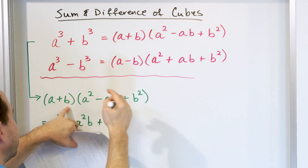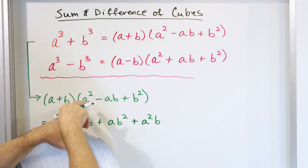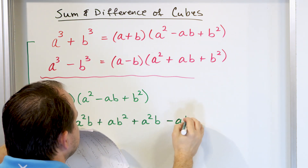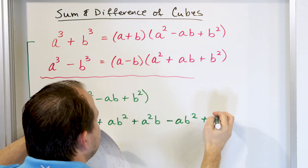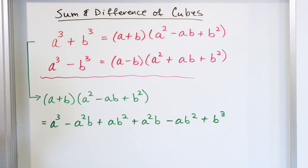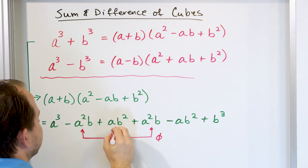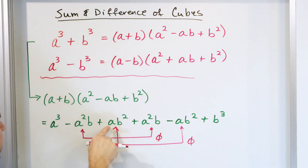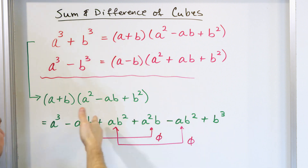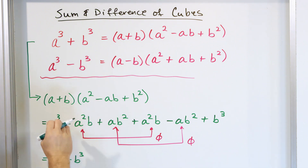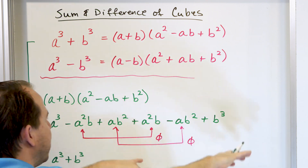Now take the second term B and distribute it as well: B times A squared is A squared B, B times negative AB is negative AB squared, and B times B squared is B cubed. That gives six terms total. Notice that negative A squared B and positive A squared B cancel, and positive AB squared and negative AB squared also cancel. The only surviving terms are A cubed and B cubed — exactly what we wanted to prove.